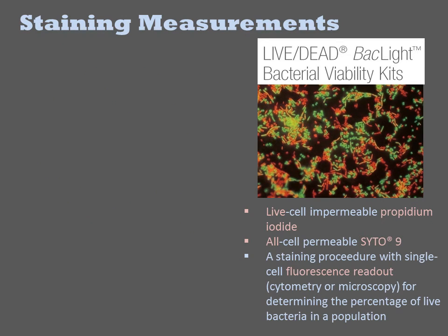Another general use staining strategy is to combine cell permeable and impermeable dyes. In the live-dead backlight kit, a live-cell impermeable dye called propidium iodide is mixed with a cell permeable dye called cyto-9. Only the dead cells will pick up the propidium iodide, but all cells get cyto-9. Based on the ratio of the two dyes in the cell, you can tell if the cell is alive or not. That measurement is done by any of the various fluorescent methods, but most typically cytometry or microscopy.